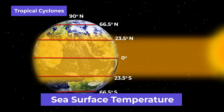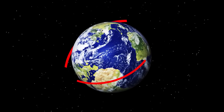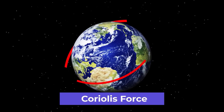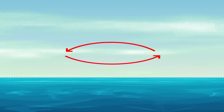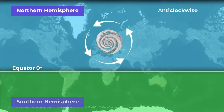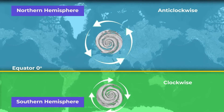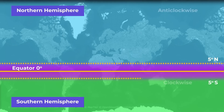The second condition is Coriolis force. Due to the Earth's rotation, an imaginary force is generated which we call the Coriolis force. This Coriolis force develops a circular flow in the air, causing the cyclone to appear anticlockwise in the northern hemisphere and clockwise in the southern hemisphere. There is almost zero Coriolis force at the equator, and therefore cyclones are not formed between 5 degrees north and south. This zone is called the Doldrums.